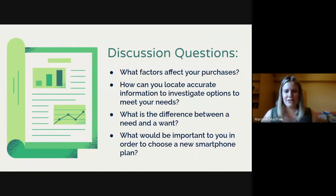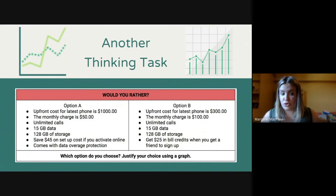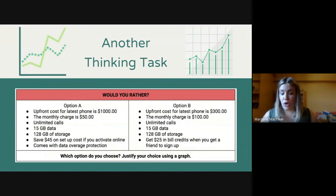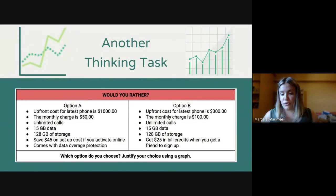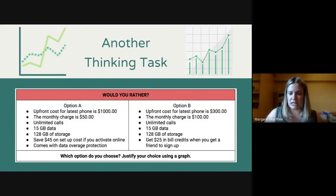My entire grade 9 class all have phones and break them semi-regularly, so they were really invested. We then kept them in the same groups but did a Would You Rather comparing option A and B for cell phone plans, asking them to justify their choice using a graph. They used Desmos to create graphs. They really liked the option of getting $25 in bill credits when you get a friend to sign up — a lot of my students were convinced they could get a friend to sign up each week. We had great discussions about whether that was a sustainable method for keeping your phone bill low and how many friends you could realistically get to switch over.